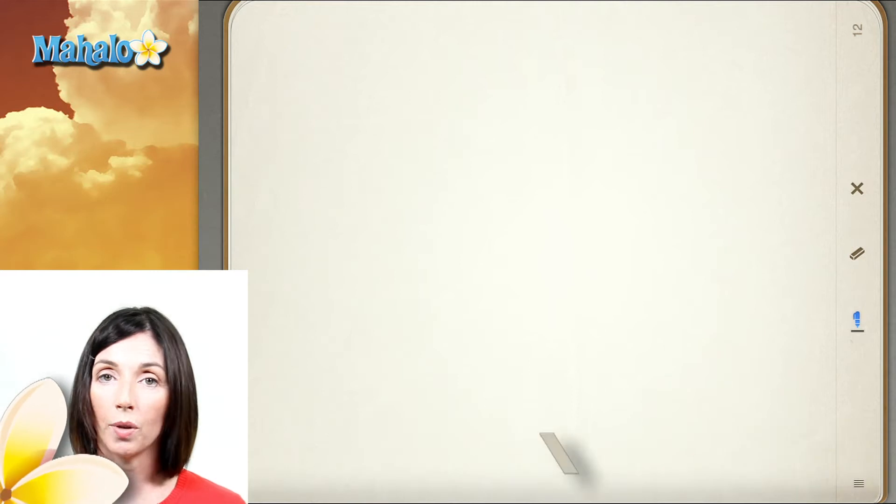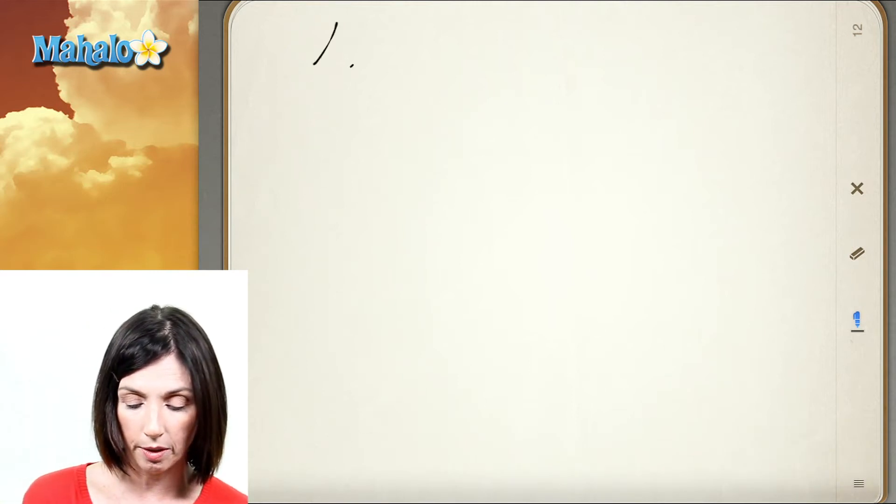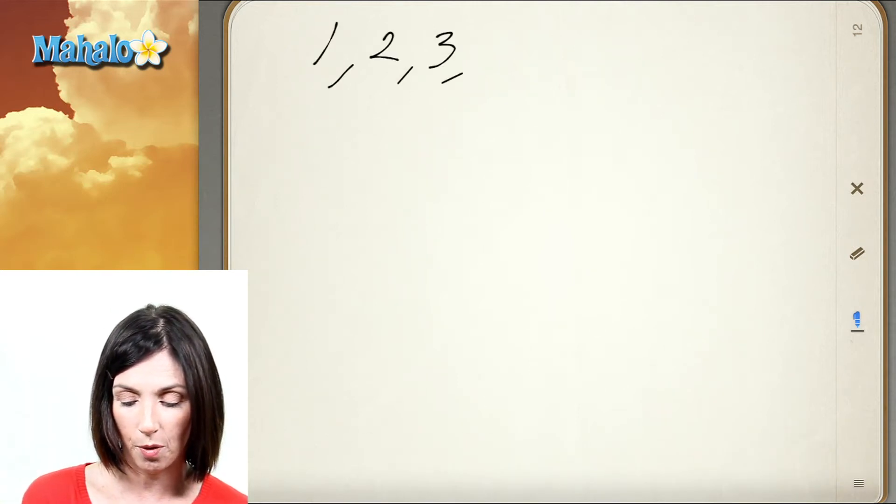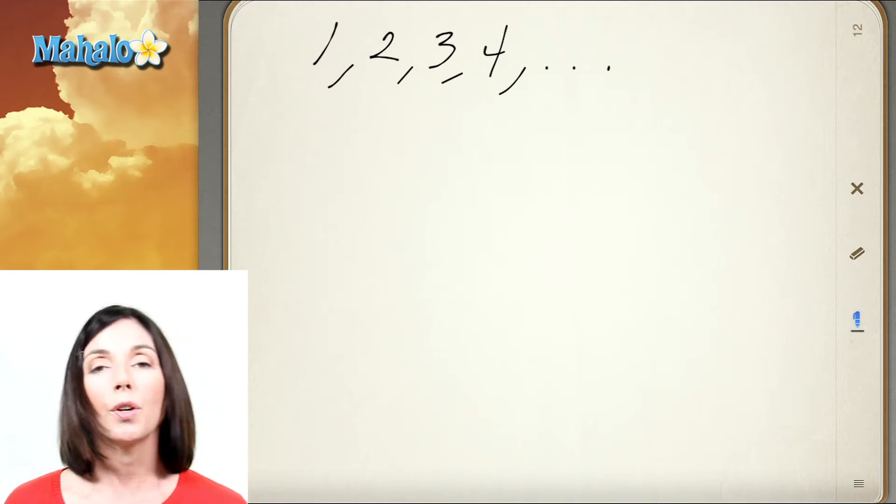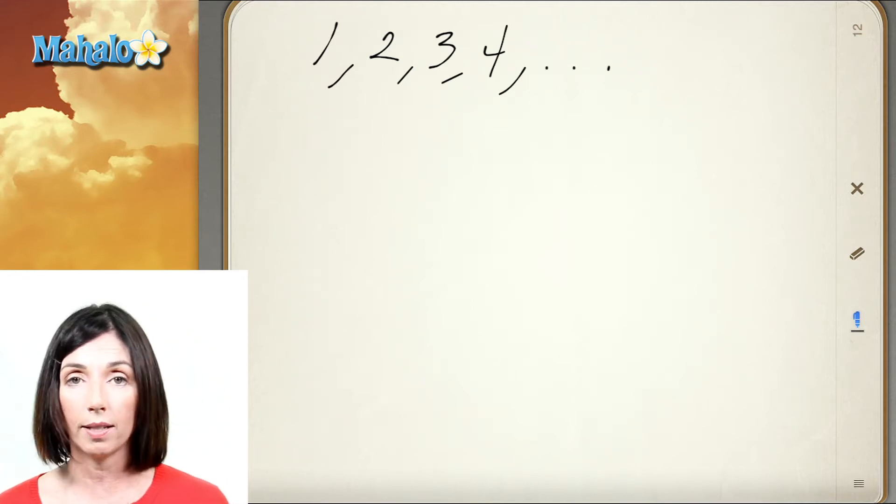Now the counting numbers or natural numbers, those are the numbers 1, 2, 3, 4, etc. Those can be classified as either prime or composite.